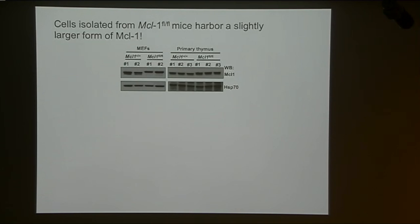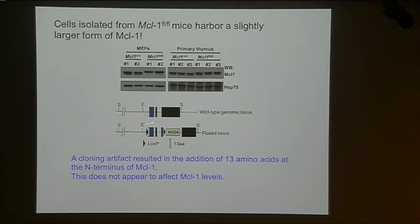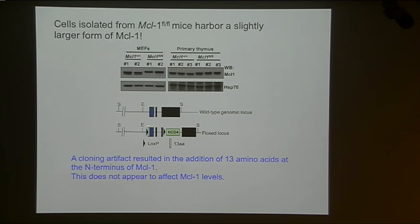Another observation that puzzled us for a while is that Mark made lysates from cells isolated from MCL1 flox/flox mice and found that the MCL1 protein in these cells was actually larger than that from wild-type mice — completely unexpected. Lee went back and sequenced the locus. It's a neat locus that also has introduced into it the human CD4 gene as a reporter of MCL1 expression. Flanking the MCL1 sequence are two LoxP sites, and if you sequence upstream of the start site of MCL1, there was in-frame another ATG that would result in addition of 13 amino acids at the N-terminus of MCL1.